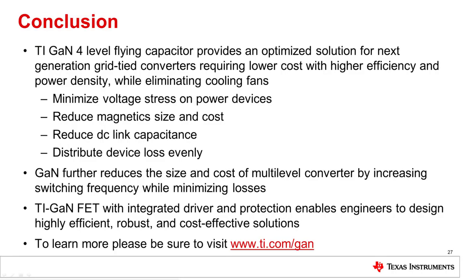The four-level flying capacitor topology utilizing TI's LMG3410R050 GaN device is an optimized solution for next-generation grid tie converters, providing low cost, high efficiency, and high power density while eliminating cooling fans. The topology reduces voltage across power devices and filters to one-third of the DC bus voltage, enabling high-efficiency 600-volt GaN devices and reducing the size of both the power inductor and EMI filter. The topology evenly distributes heat across power devices to simplify cooling, and GaN's high switching frequency further reduces filter components to improve power density while maintaining high efficiency. TI GaN FETs with integrated driver and protection enable efficient, robust, and cost-effective power solutions.